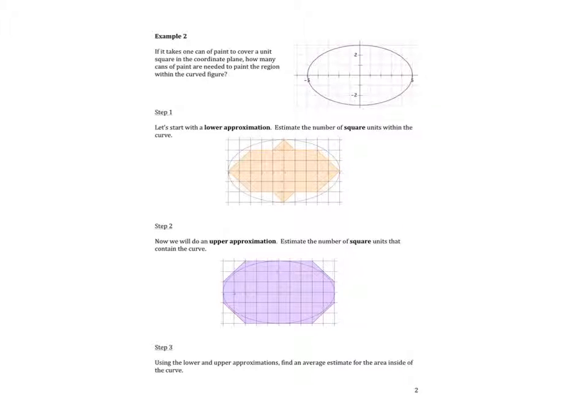Example 2. If it takes one can of paint to cover a unit square in the coordinate plane, how many cans of paint are needed to paint the region within the curved figure? The curved figure in this case is called an ellipse. When we don't have perfect polygons and we want to find the area, we have to use another method. We're going to start with finding a lower approximation, and then we'll do an upper approximation, and take the average of the two to get the best case scenario.